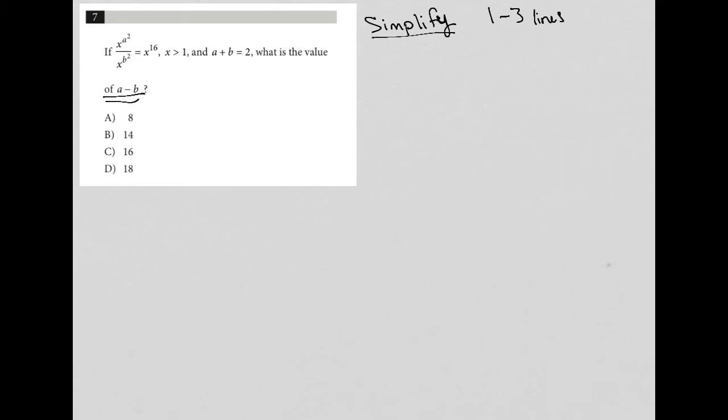if x to the a squared over x to the b squared, which is already a little confusing for maybe some of us, equals x to the 16th, and x is greater than one, and a plus b equals two, what is the value of a minus b?